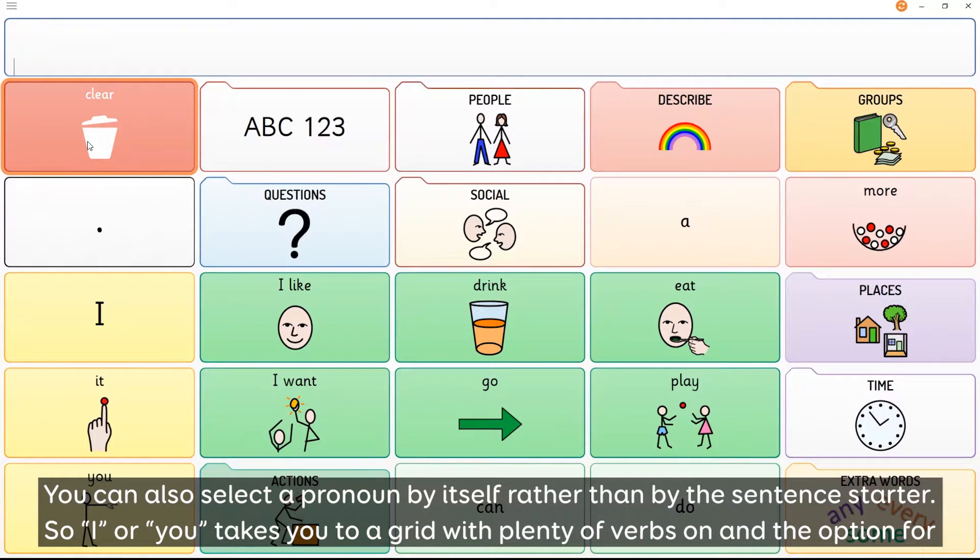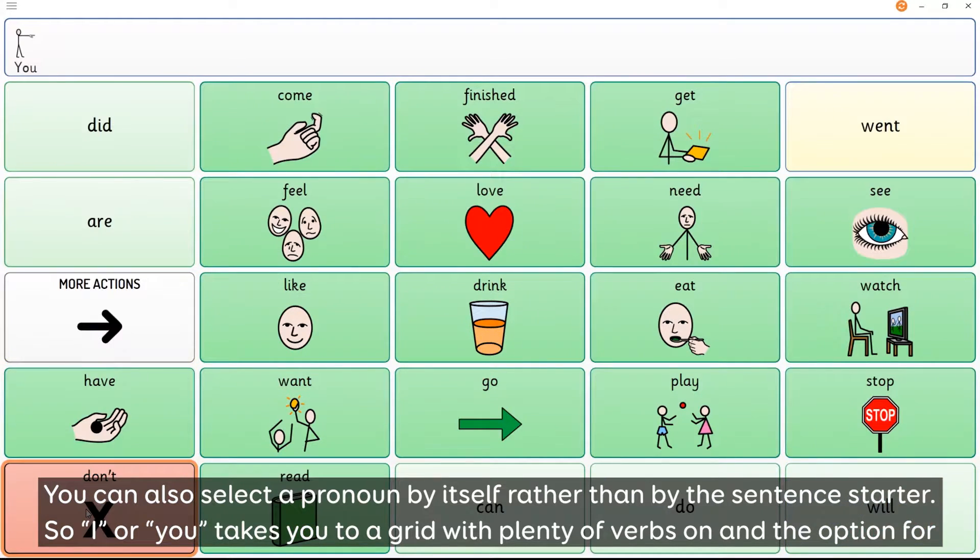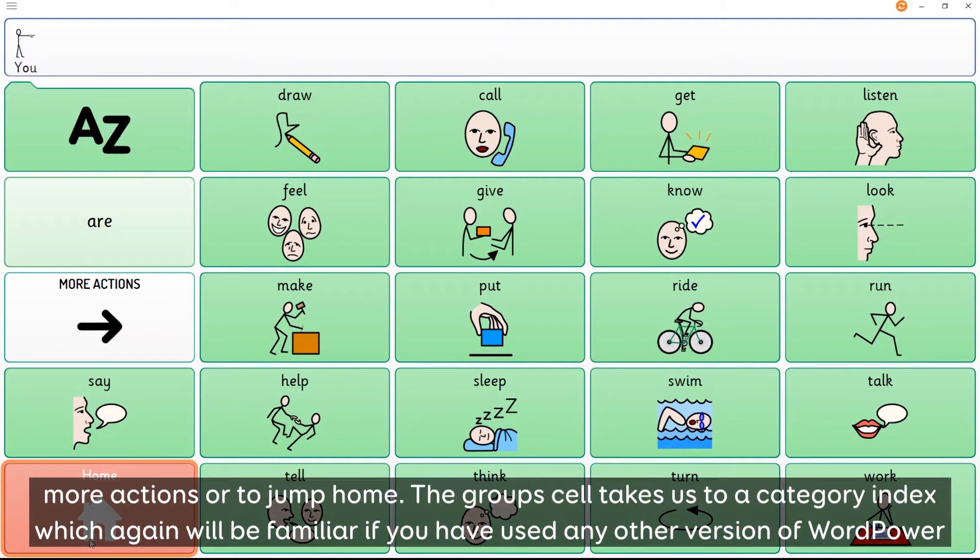You could also select a pronoun by itself rather than in the sentence starter. So I, or you, takes you to a group with plenty of verbs on and the option for more actions or to jump home.